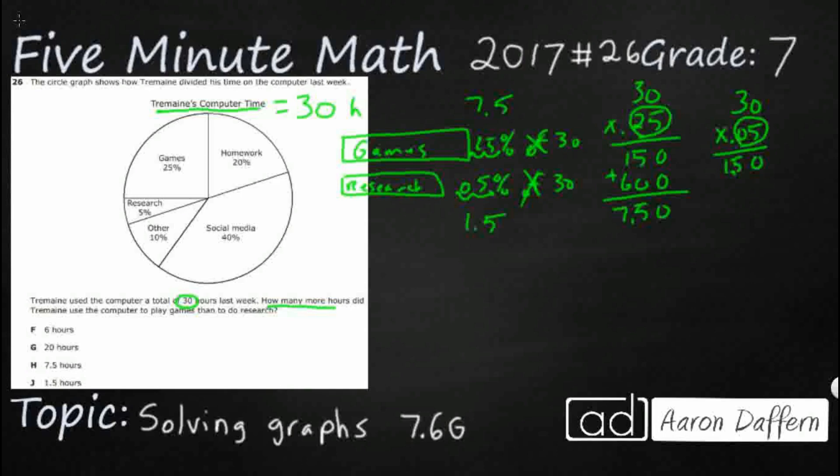Alright. So if I subtract 7.5 minus 1.5, then there we go. We're going to get 6.0 or just plain 6.